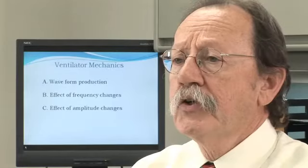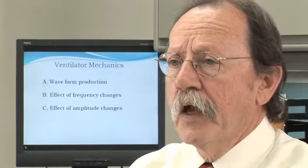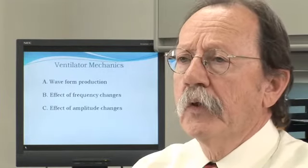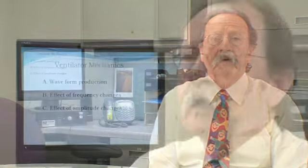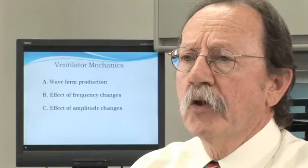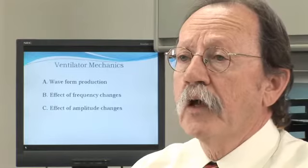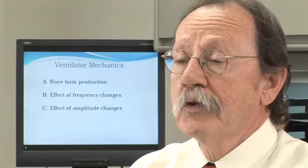Frequency changes with an oscillator: as you go down on frequency, you increase tidal volume. With the jet ventilator, because it has a fixed inspiratory time, frequency has effectively no effect on the tidal volume delivered. The flow interrupter changes a little bit, but not as much as the oscillator. Amplitude changes are geared to give you bigger tidal volumes, and they do the same for all three devices.